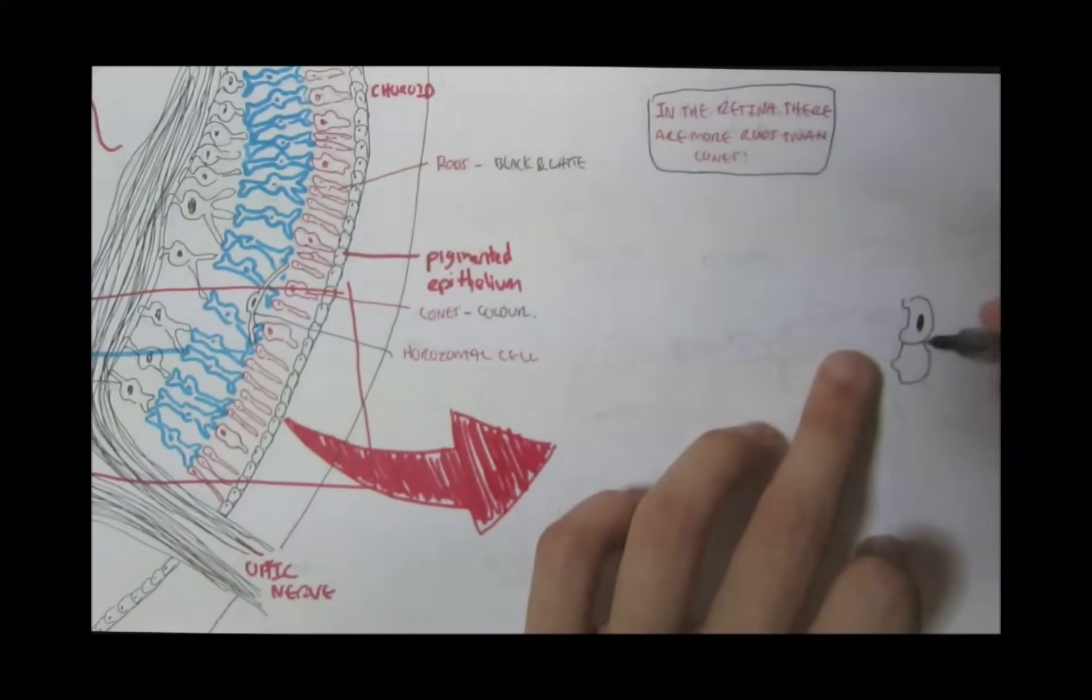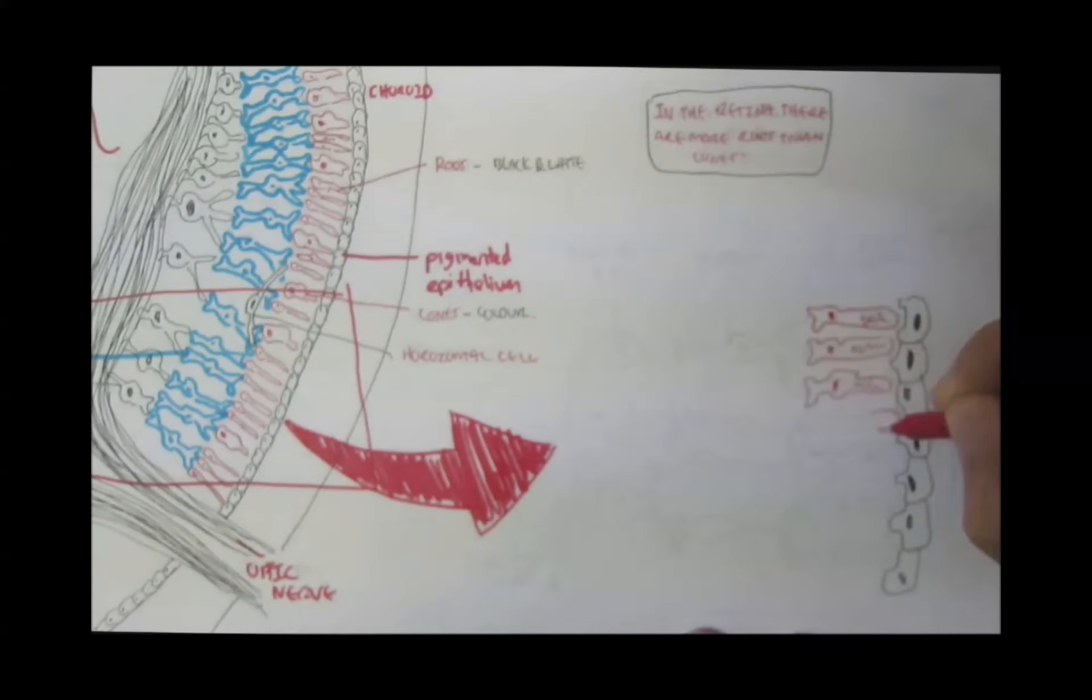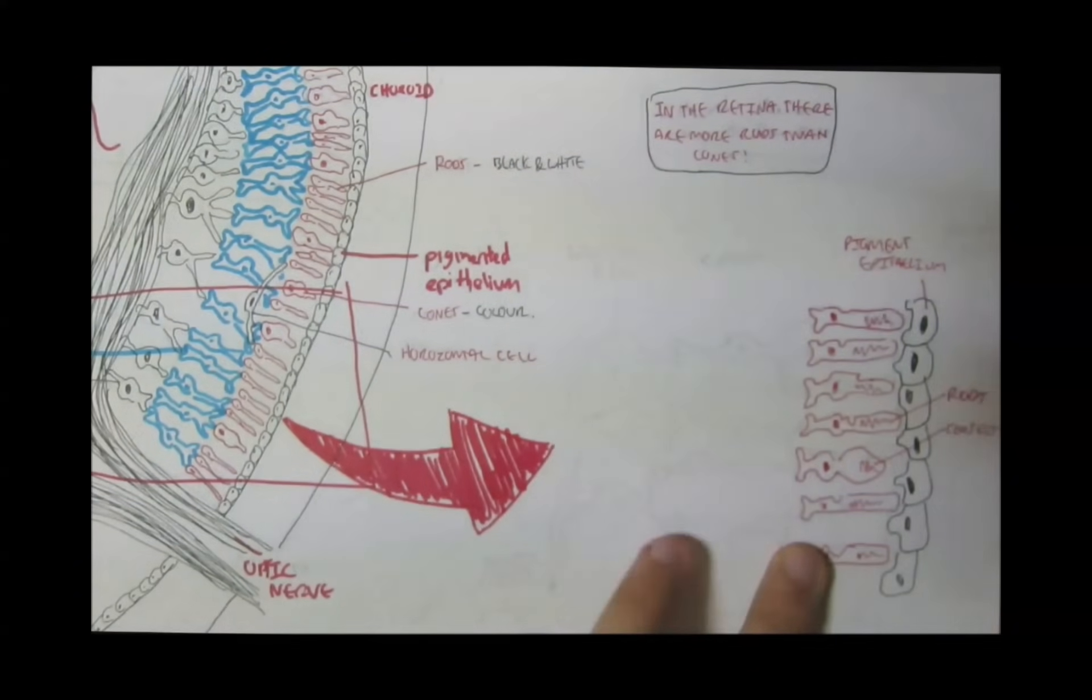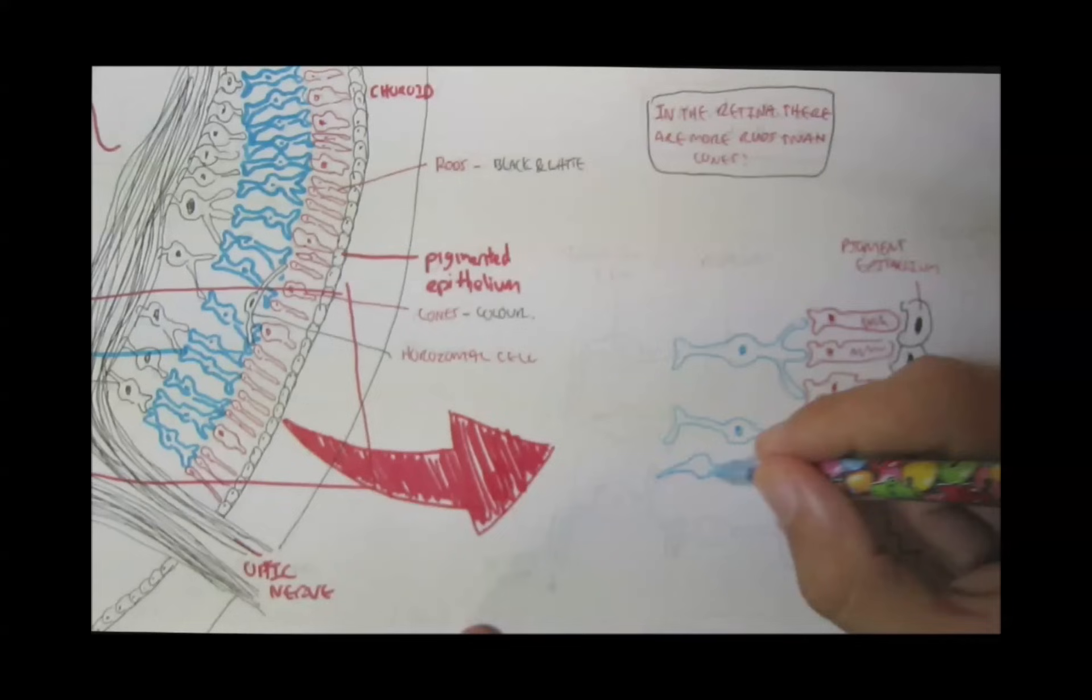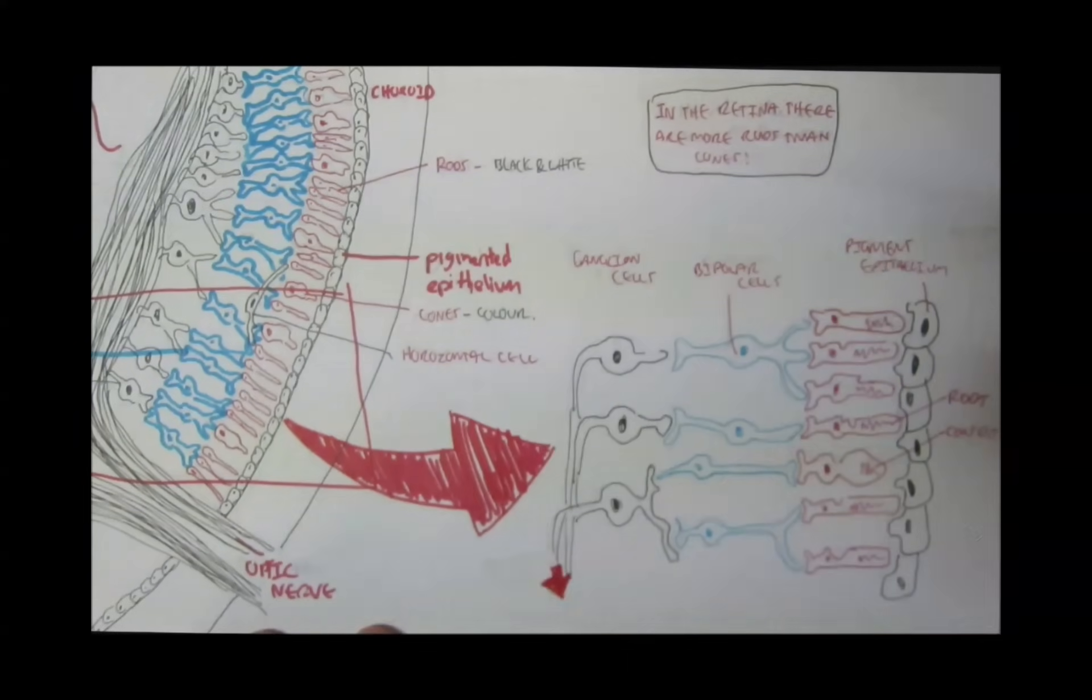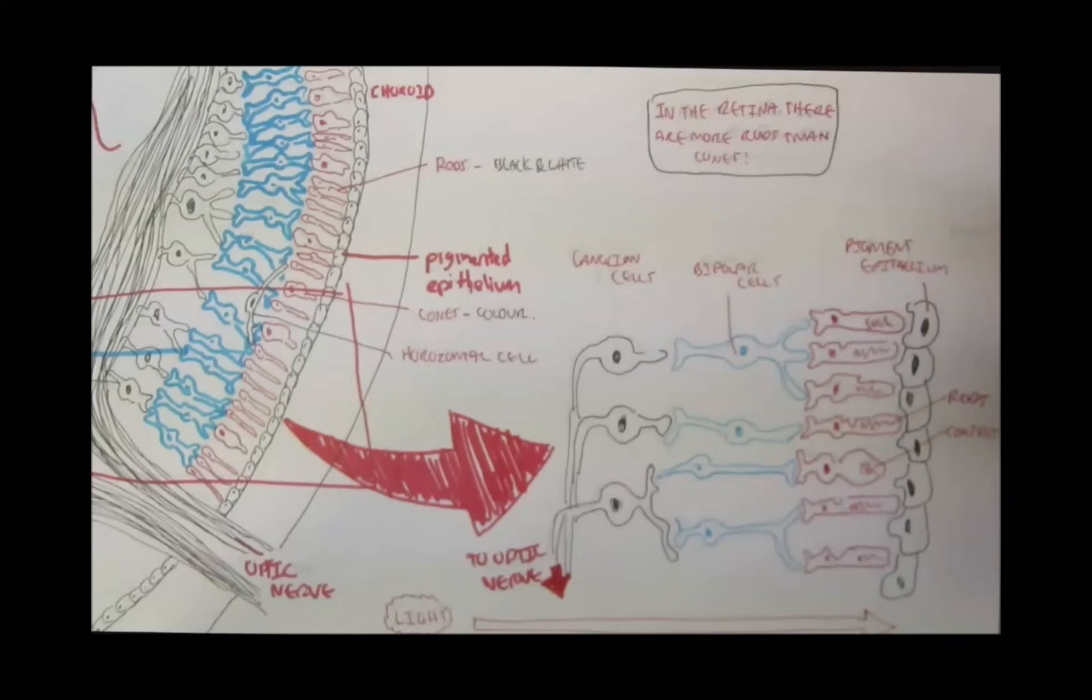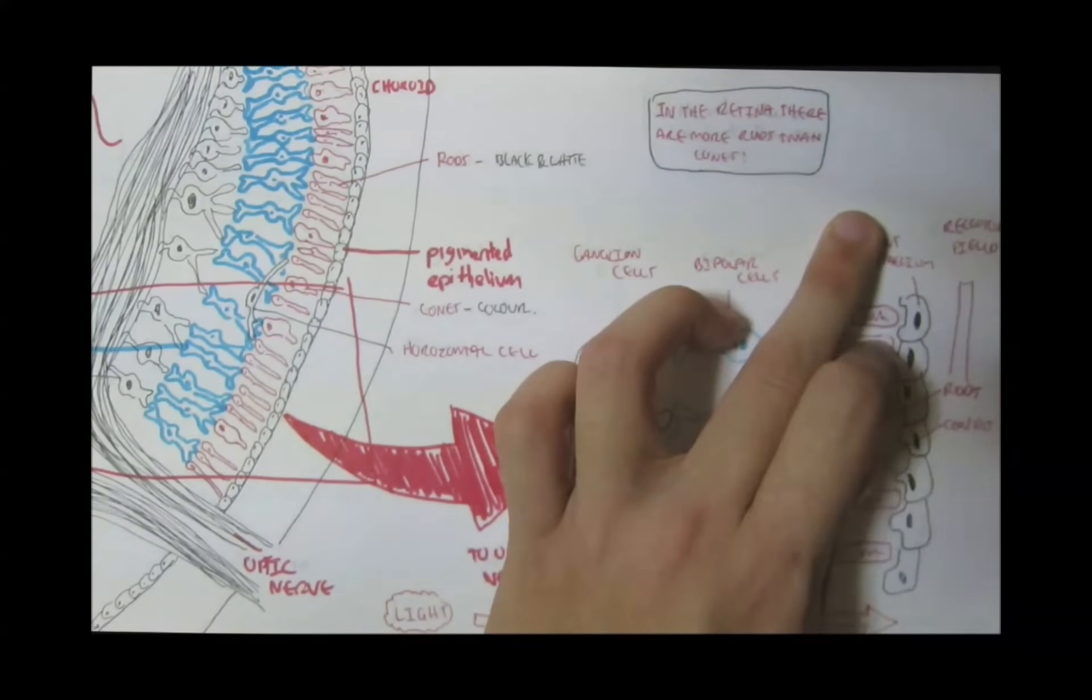So, here again we have the pigmented epithelial, the rods and cones. So, the rods and cones are the first ones to receive the light. The rods and cones receive the light and then pass it onto the bipolar cells. Here are the bipolar cells, which then relay the signal to the ganglion cells, which then form the optic nerve. Light travels this way and stimulates the photoreceptors, the rods and cones, which form the receptor field.